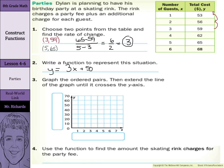Now graph the ordered pairs then extend the line until it crosses the y axis. Our number of guests is our x, our y axis is our total cost in dollars. Graph the ordered pairs: 1, 53 is around here, 2, 56, 3, 59, 4, 62.